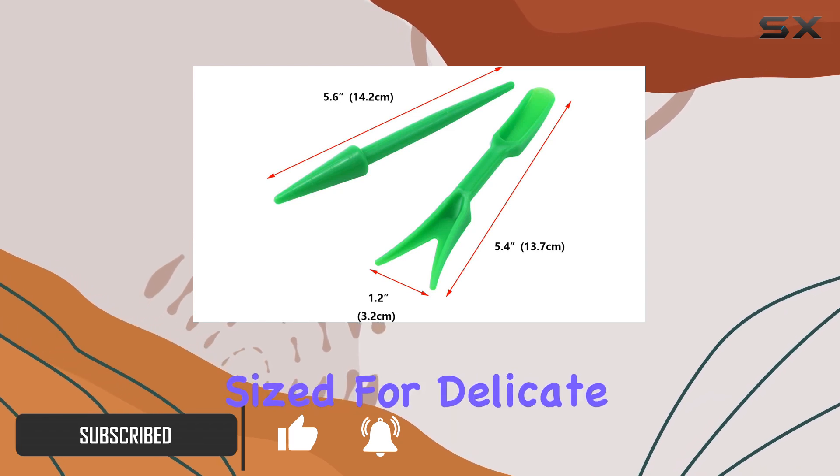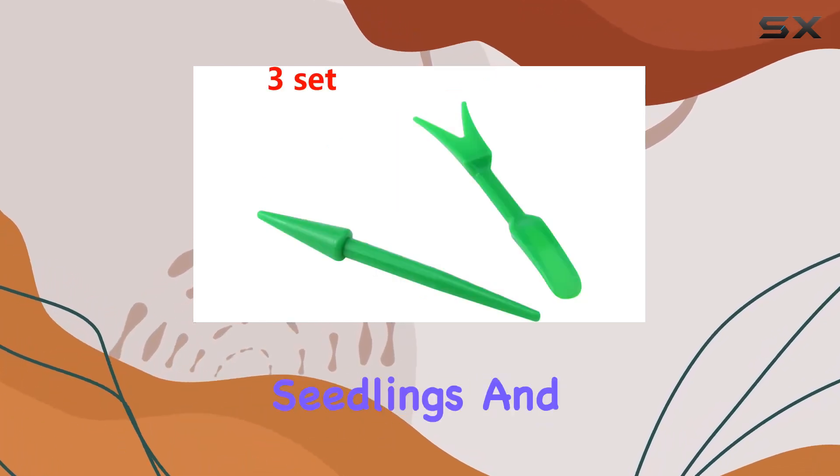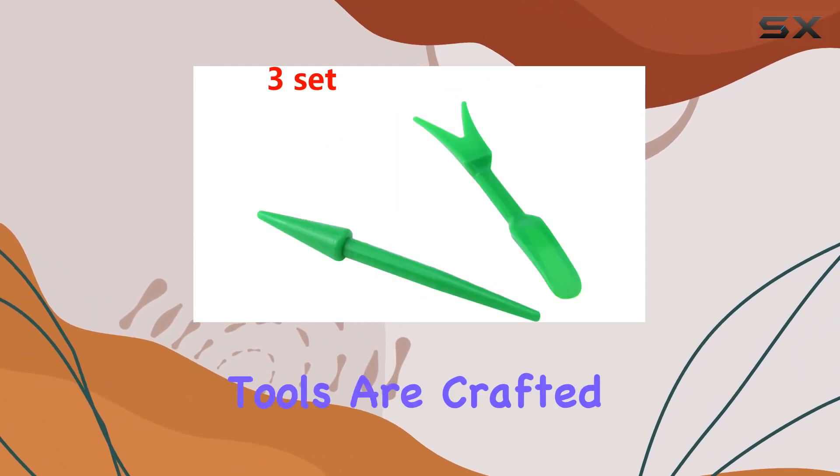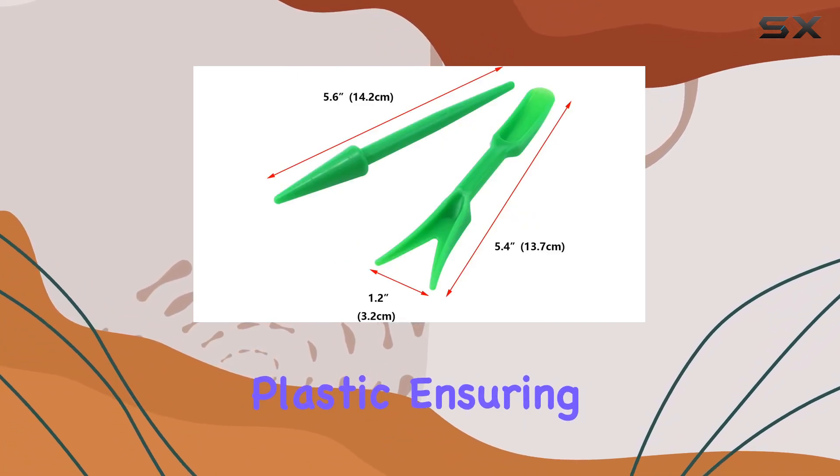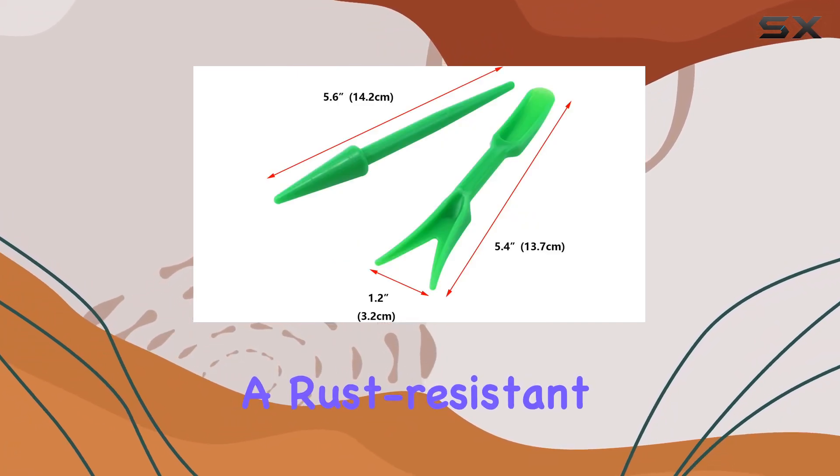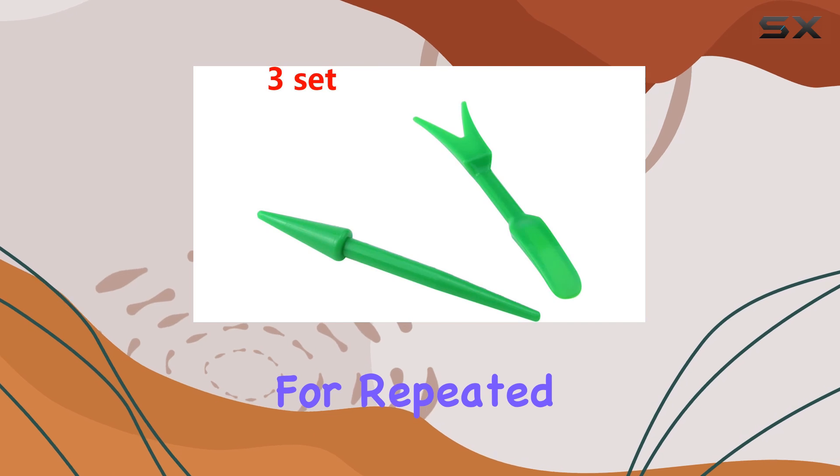Making them perfectly sized for delicate tasks such as transplanting seedlings and seeding. The tools are crafted from sturdy plastic, ensuring durability and a rust-resistant performance that's ideal for repeated use.